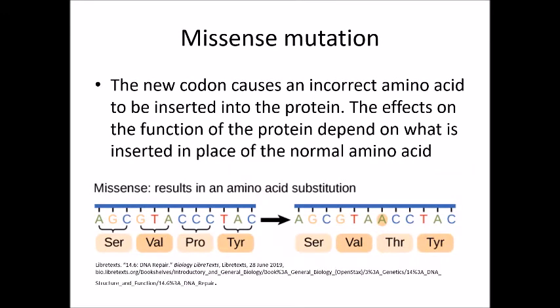Missense mutation: the new codon causes an incorrect amino acid to be inserted into the protein. The effect on the function of the protein depends on what is inserted in place of the normal amino acid.